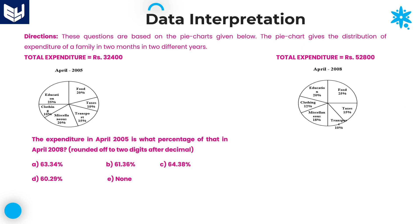Let's move to the second question. The expenditure in April 2005, which is 32,400, is what percentage of that in 2008? In 2008, total expenditure is 52,800. The information in brackets says to round up to 2 digits after the decimal point, so we need to calculate up to 2 decimal places. As 'none of these' is an option here, you need to calculate the entire calculation.